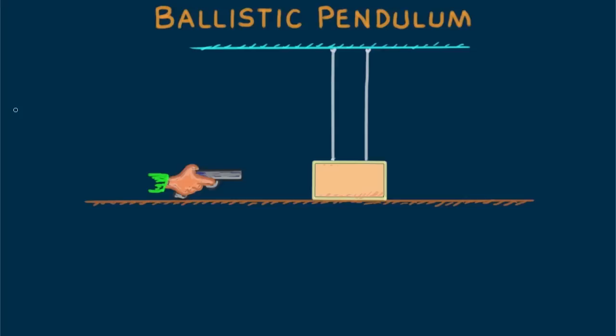Here's the setup. Wishing to find the velocity of a high-speed bullet, we fire it into a block of wood suspended by a pair of strings.